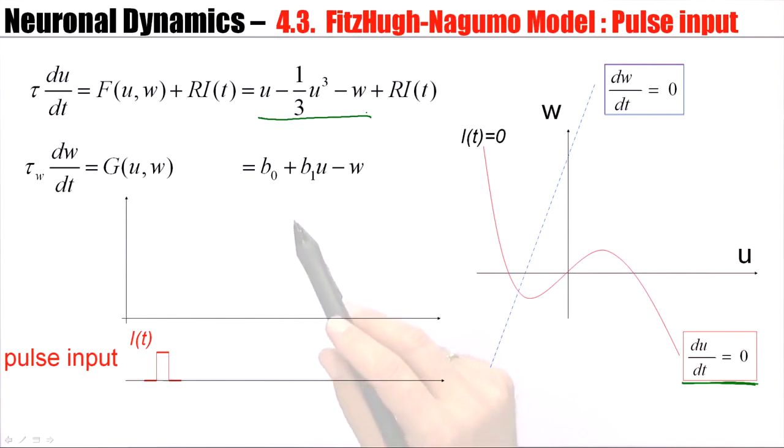And then we have the w nullcline, which is given by a linear function indicated by a blue line here. The input is zero, so I(t) is zero, except at this very short moment when we inject a current pulse.